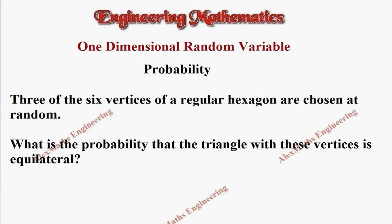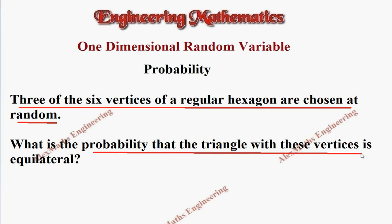Hi students, this is Alex here. In this problem, we have given 3 of the 6 vertices of a regular hexagon are chosen at random. What is the probability that the triangle with these vertices is equilateral?